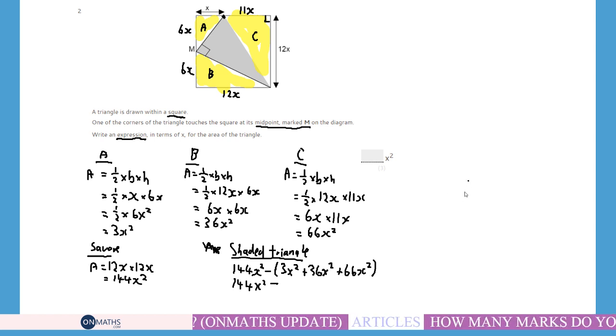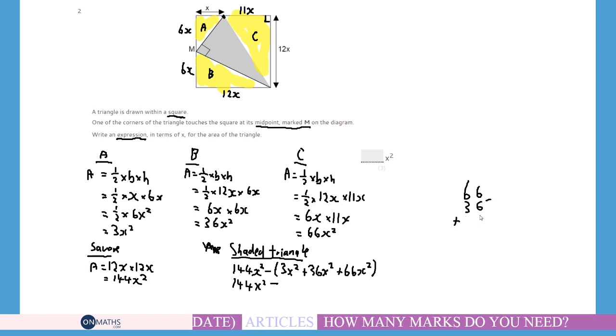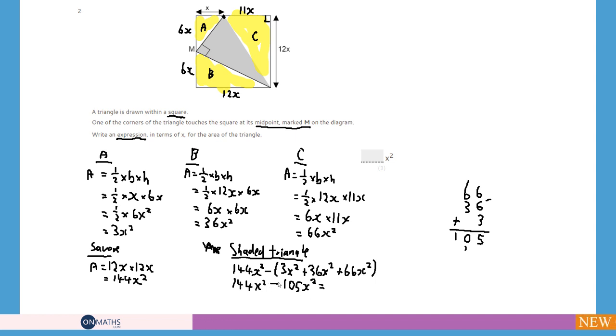So, it would be 144X squared take away 105X squared. This time, I can just do this in my head. 144 take away 100 is 44. Then, take away 5 is going to be 39X squared. So, my answer here is 39. Check my working out. These 12 plus 3 is 15. That works out. That makes sense. Take away the 100 is 44. Take away the 5. It's 39X squared.